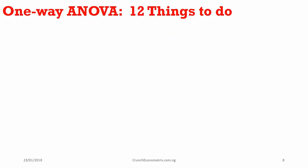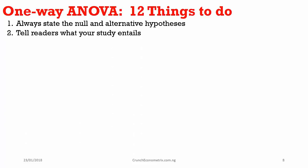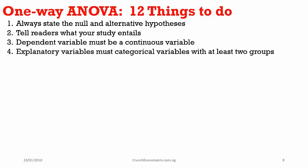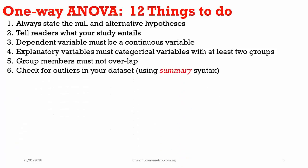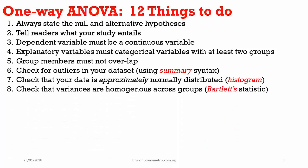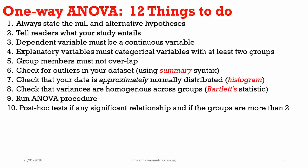I'll wrap up this tutorial by telling you the key things you need to do when engaging the one-way ANOVA procedure. Number one: always state your null and alternative hypothesis. Number two: always tell the readers what your study is about. Number three: your dependent variable must be continuous. Number four: your explanatory variable must be categorical with at least two groups. Number five: group members must not overlap. Number six: check for outliers using the summary syntax in Stata. Number seven: check whether your data is approximately normally distributed — you can use the histogram to check that. Number eight: check whether your variances are homogeneous across groups; the Bartlett statistic can give you a clue. Then go ahead and run your ANOVA procedure.